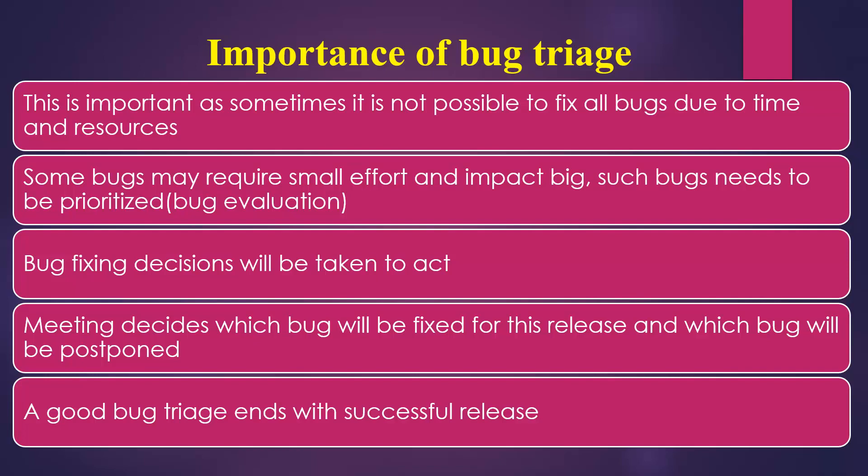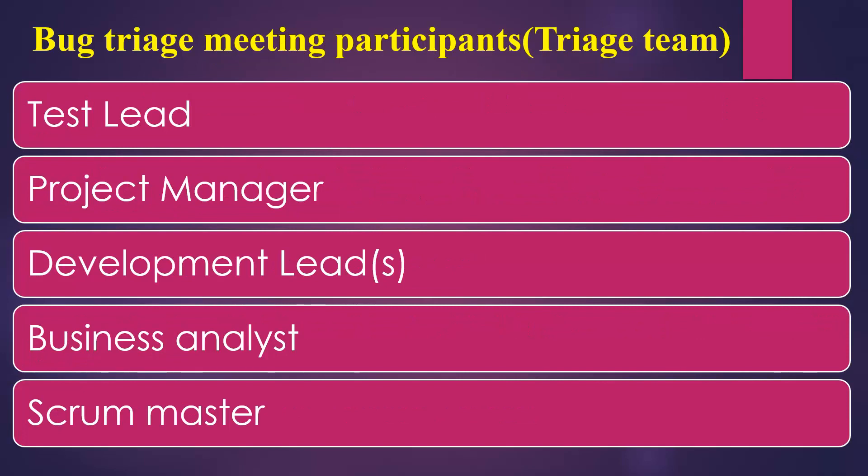A good bug triage ends with a successful release where all priority bugs are fixed. The bug triage meeting participants, also called the triage team, are the decision makers who decide which bugs need to be fixed for a given release. The people who participate are the test lead, project manager, development lead or leads, business analyst, and a scrum master if you are following an agile process.